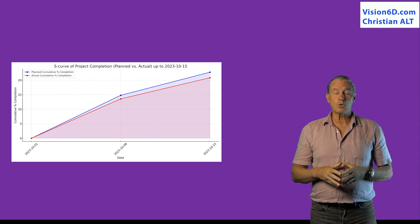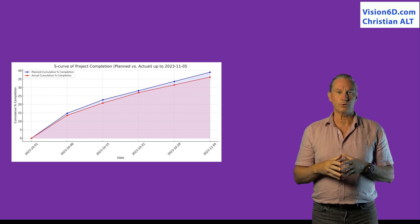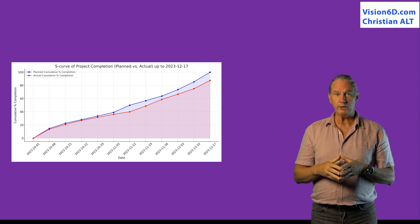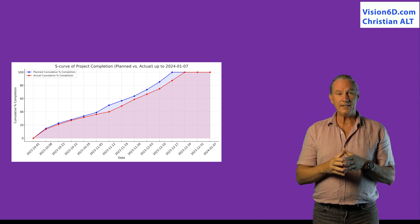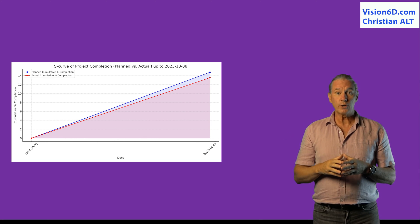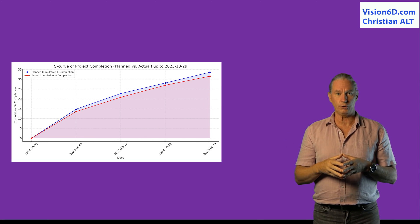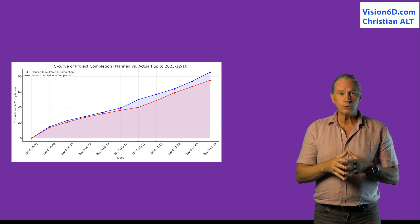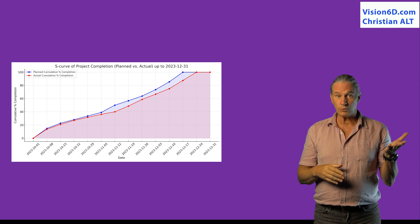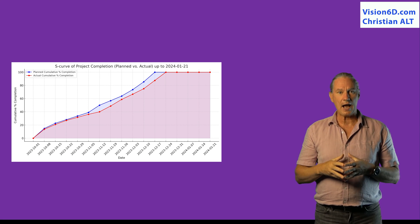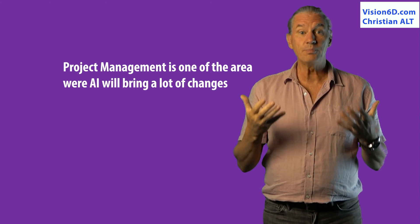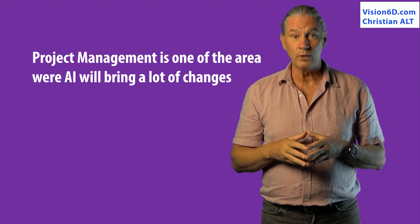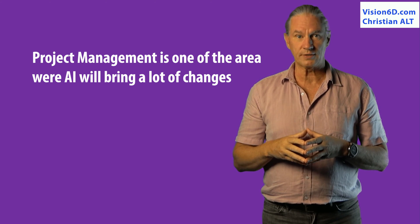You see that it's quite simple to construct an S-curve with ChatGPT. Of course, that S-curve was between the planned schedule and the actual values. You can also do the same kind of curve with the budget and the actual costs, and you can also do it with the planned working hours versus the actual working hours. For me, it's always a pleasure to show you some of my experiences with AI in project management.